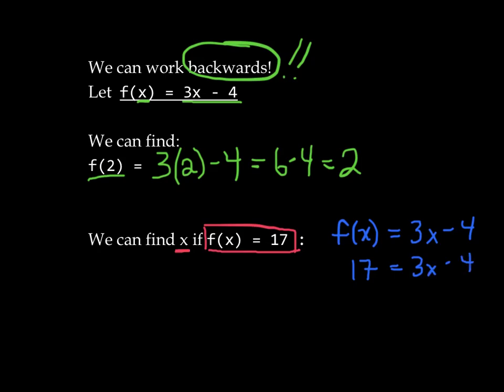In other words, I had some unknown value of x, inputted into f of x, and the result was 17. Well, this is just simple algebra from here. We'll add 4 to both sides. That gives us 21 equals 3x. Divide by 3, and it gives us x equals 7.